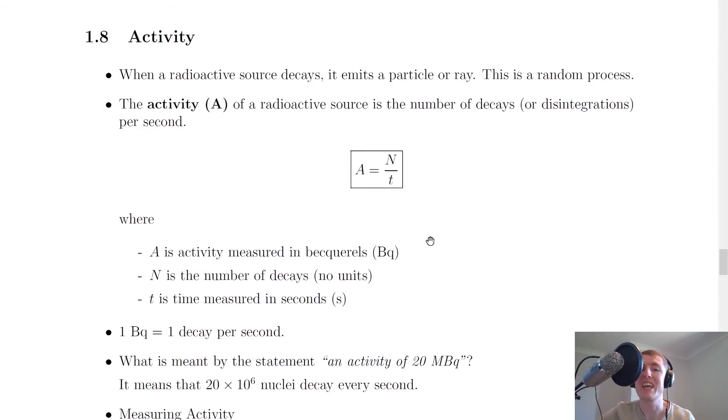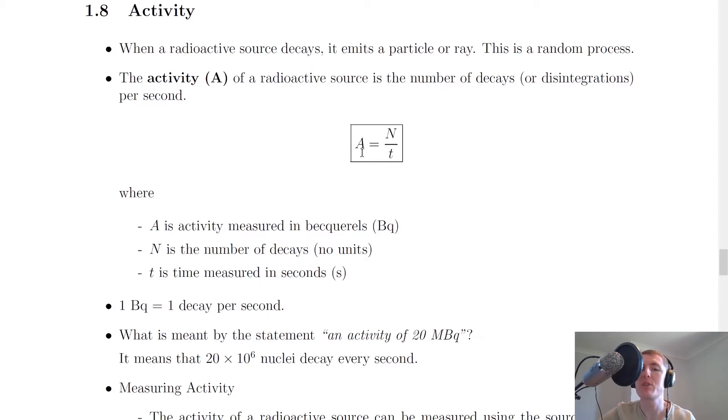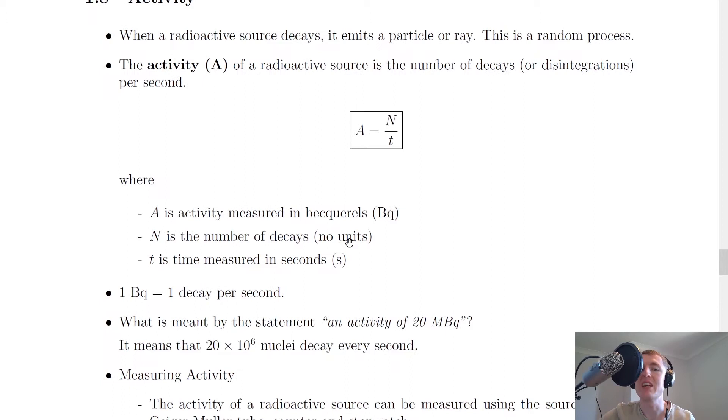This gives us an idea of how quickly the radioactive source is decaying. We've got an equation for this: activity is given the symbol capital A, and this equals capital N divided by t: A = N/t, where A is activity measured in becquerels (Bq).